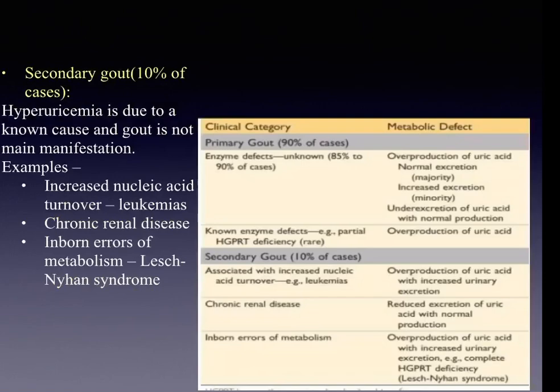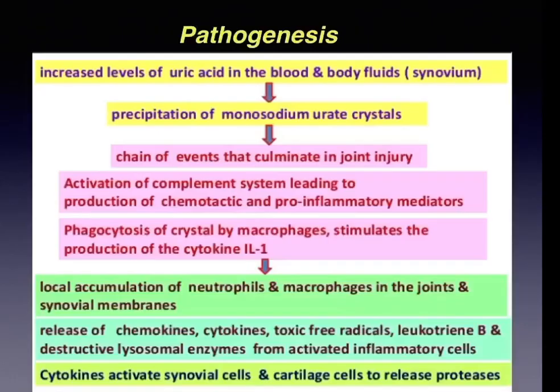In secondary gout, hyperuricemia has a known cause. In leukemias, increased nucleic acid turnover results in hyperuricemia. In chronic renal disease, there is reduced excretion of uric acid with normal production. In inborn errors of metabolism like Lesch-Nyhan syndrome, there is overproduction of uric acid with increased urinary excretion.